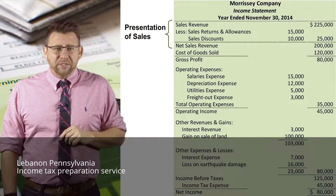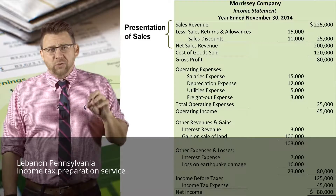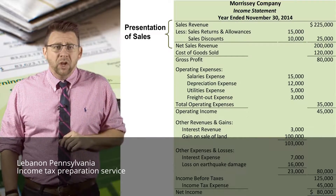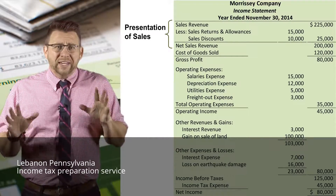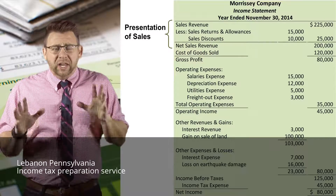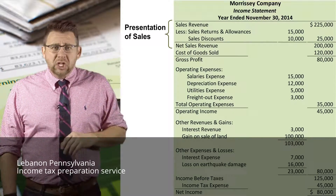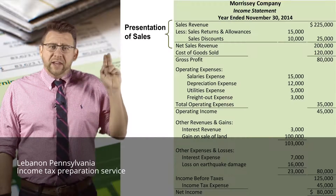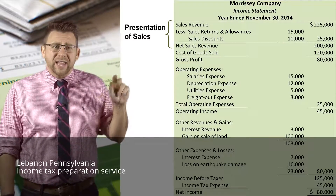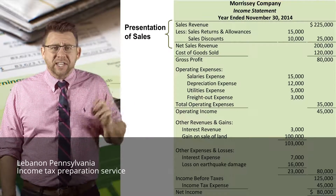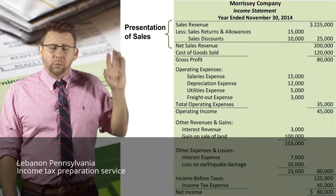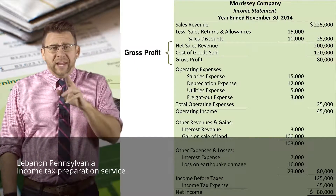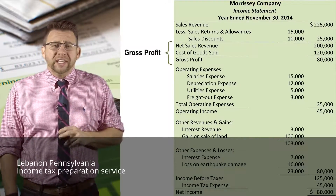The multi-step income statement starts with the calculation of net sales revenue. No other revenue is included in this section. Sales revenue is reported first, then sales returns and allowances and sales discounts are deducted to arrive at net sales revenue.